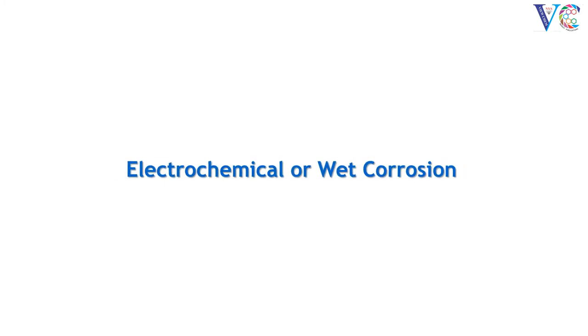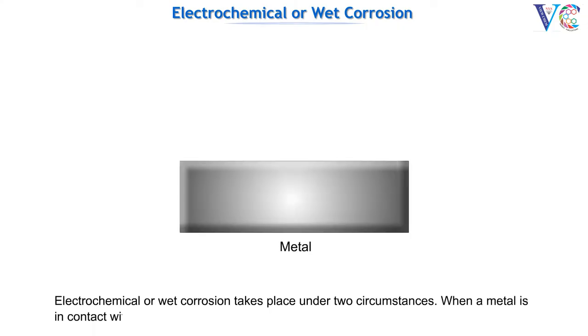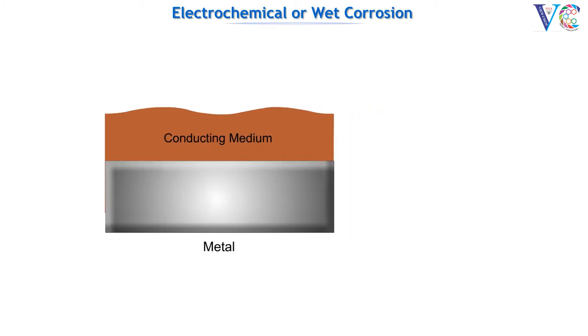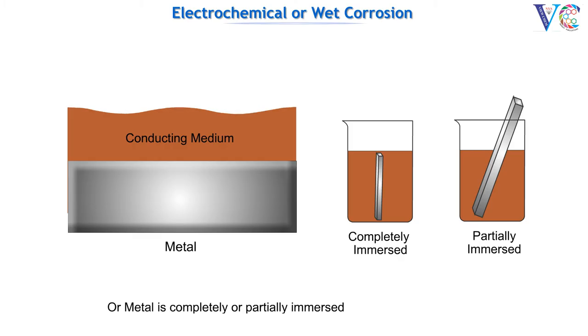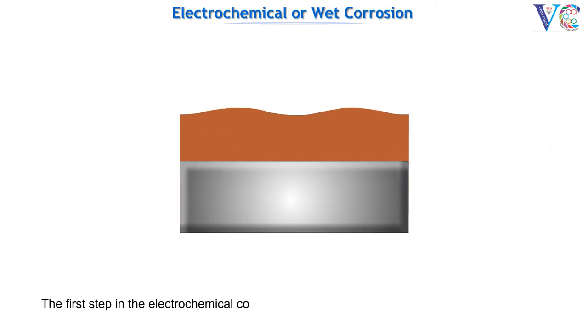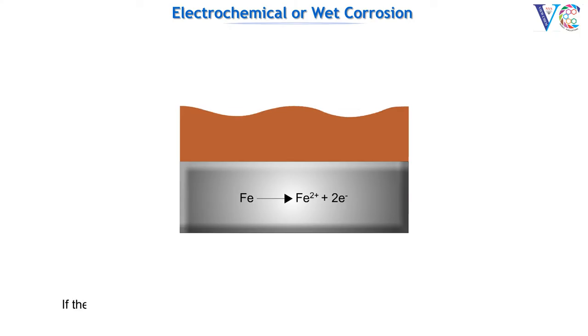Electrochemical or wet corrosion takes place under two circumstances: when a metal is in contact with a conducting medium, or a metal is completely or partially immersed in the corroding solution. The first step in electrochemical corrosion involves the loss of electrons by the metal due to dissolution in the corroding medium.